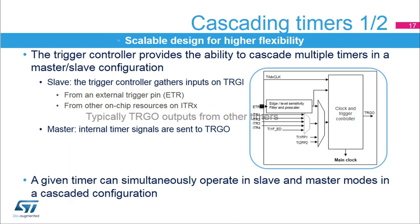The trigger controller allows you to cascade multiple timers in a master-slave configuration. A timer can control one or more timers as the master, or be controlled by another timer as the slave. In master mode, it can redirect multiple internal control signals to an on-chip TRGO trigger output. In slave mode, it gathers multiple inputs on TRGI, coming from the external trigger pin ETR or from one of the four internal trigger inputs ITR1 to ITR4. Additionally, input capture pins 1 and 2 can also be used as an internal trigger, typically to reset the counter. The slave and master modes can be programmed independently, allowing a timer to simultaneously operate in both modes in a cascaded configuration.